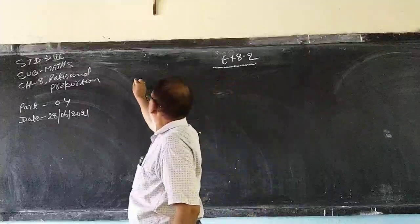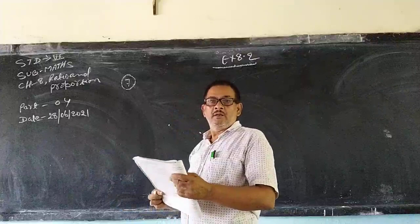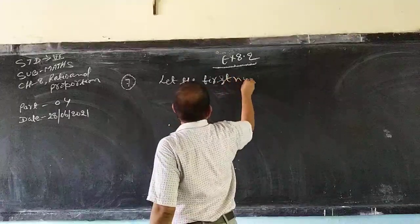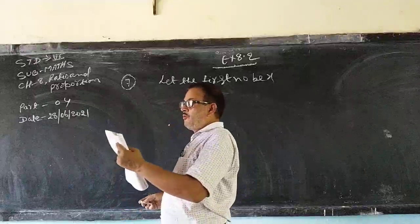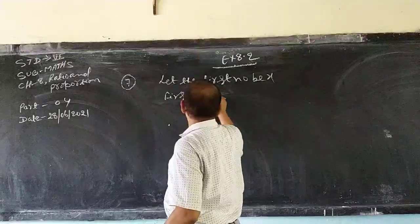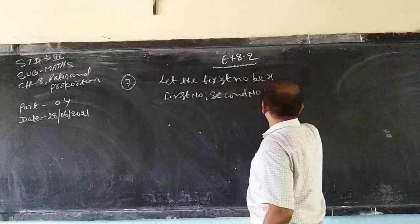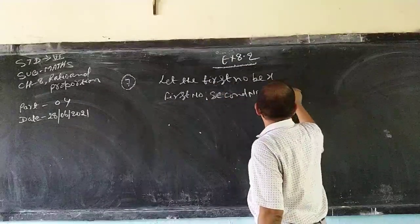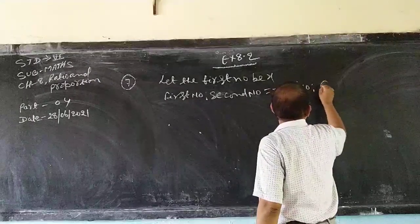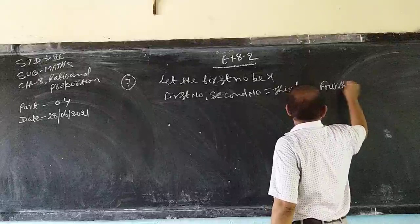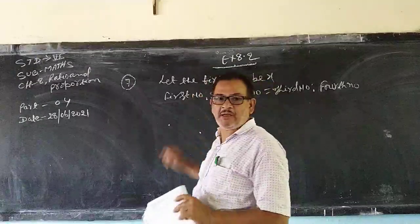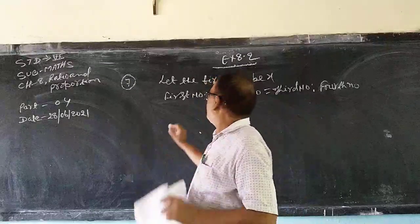7th question. Let the first number be x. Now first number ratio second number is equal to third number ratio fourth number. So my dear students, here the question is telling you first number you have to find. Let the first number be x.